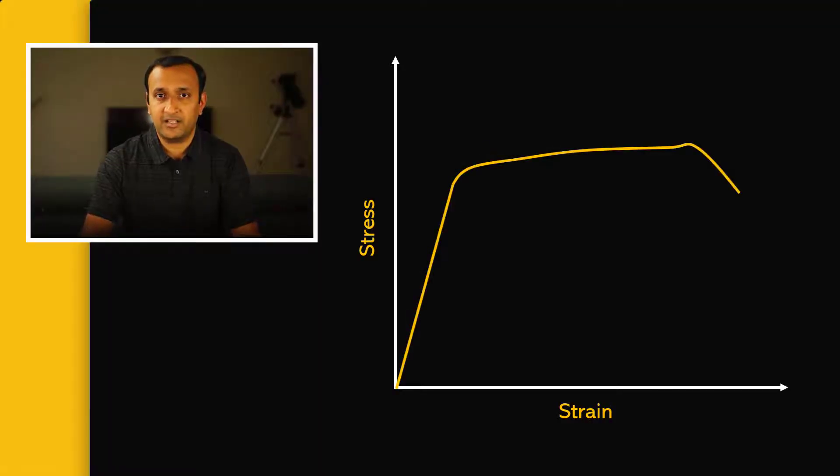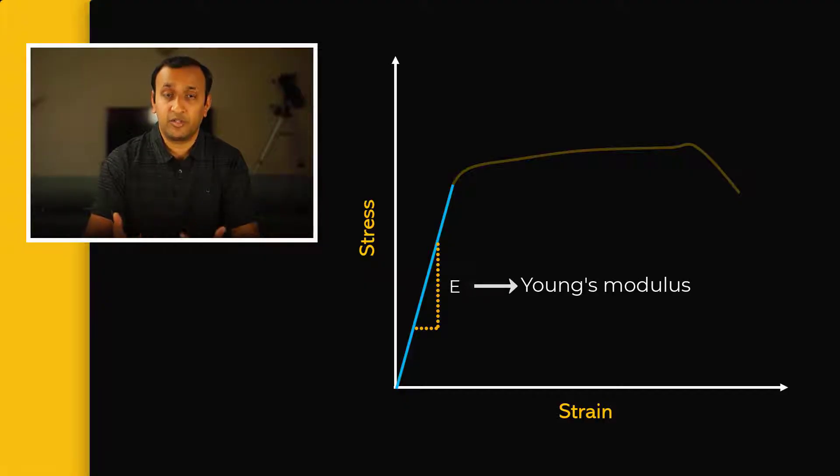Here's a typical stress-strain curve for metals under uniaxial tension. At the onset, they undergo linear elastic deformation, where the stress delivered in the material is directly proportional to the strain, and the constant of proportionality or the slope of the curve is the Young's modulus of the material.